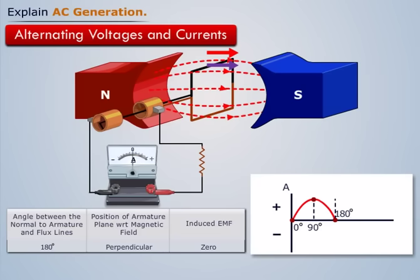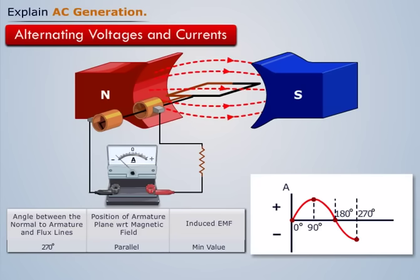Now in the second half of rotation, the armature begins to cut through the flux lines in opposite direction and as a result, the voltage induced reverses and becomes negative. This negative voltage peaks when the armature reaches 270 degrees as at this position, the flux lines are being cut at right angles by the armature.